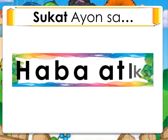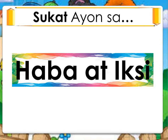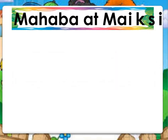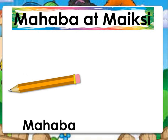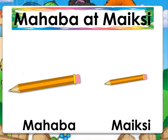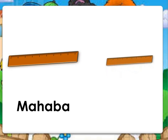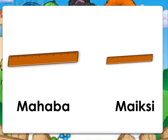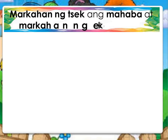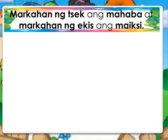Sukat ayon sa haba at iksi. Mahaba at maiksi. Mahabang lapis. Maiksing lapis. Mahabang ruler at maiksing ruler. Ngayon naman, markahan ng check ang mahaba at markahan ng x ang maiksi.